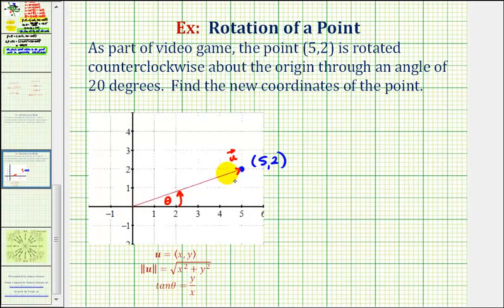We'll start by sketching a vector here in red where the terminal point is (5,2). We'll find the direction of this vector given by angle theta, as well as the magnitude of this vector. Then we'll increase theta by 20 degrees, then determine the terminal point of the new vector.